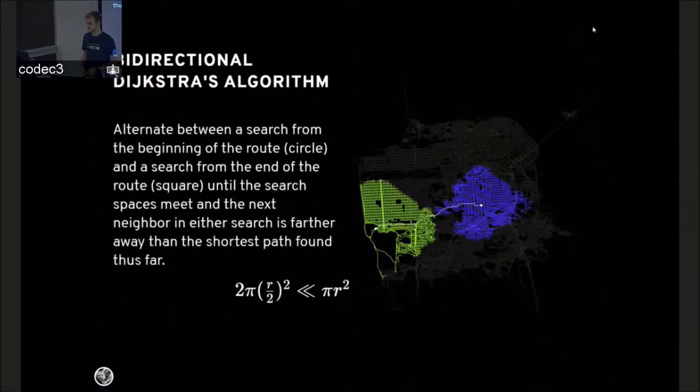Bidirectional Dijkstra's is simply starting a Dijkstra search at the start, stopping it, searching from the end, starting from the start again, and interleaving two Dijkstra searches until they intersect. The details are a bit more complex, but you can see the search space is significantly smaller.